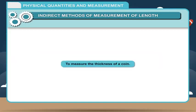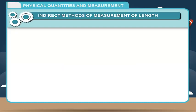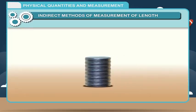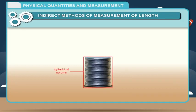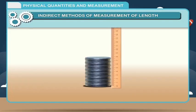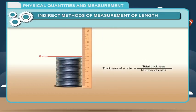Activity — To measure the thickness of a coin: Take about 20 to 25 identical coins and place them one over the other to form a cylindrical column. The height of this stack can easily be measured by a ruler placed vertically against it. To find the thickness of a single coin, divide the total thickness by the number of coins: Thickness of a coin = Total thickness ÷ Number of coins.